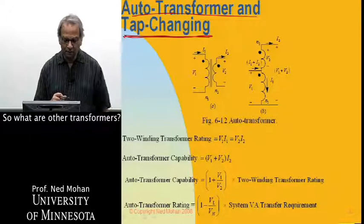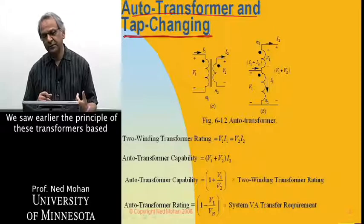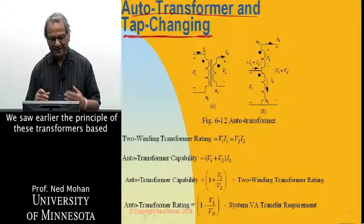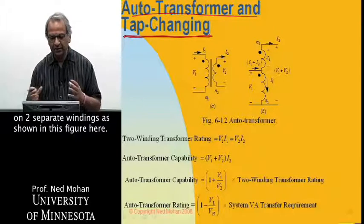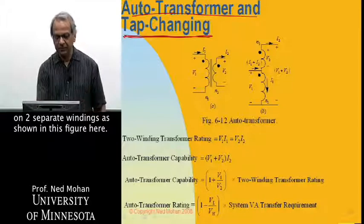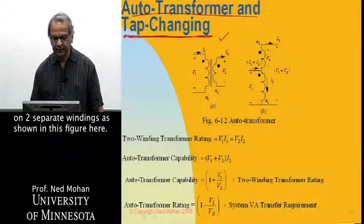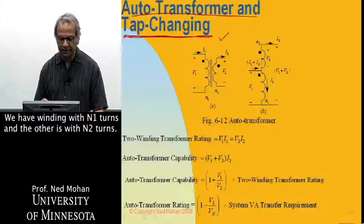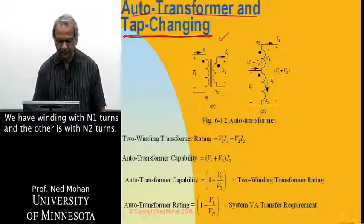So what are autotransformers? We saw earlier the principle of these transformers based on two separate windings, as shown in this figure here. So we have a winding with N1 turns, and the other one is with N2 turns.